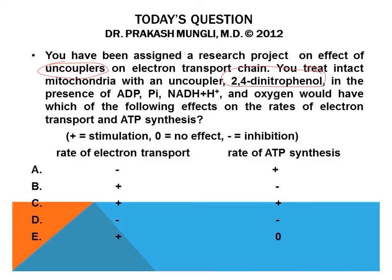Because of this pore, the gradient is not built properly, so the proton motive force is not created. As a result, the flow of protons through ATP synthase decreases. However, when the proton gradient is not built properly, the electron transport chain compensates by running faster than before — oxidizing NADH+H⁺ much more rapidly.